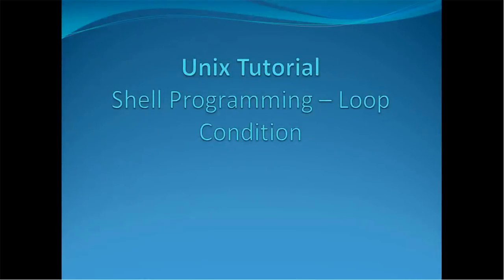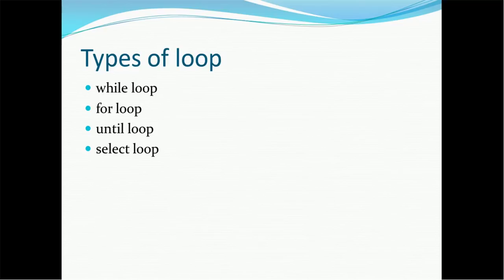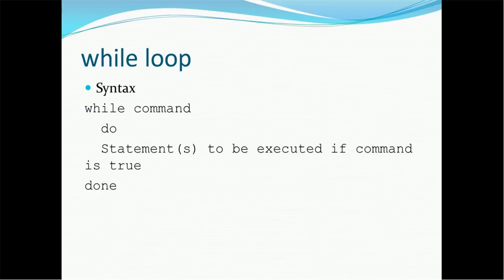Hello everyone, welcome back. In today's tutorial on Unix, we are going to see another concept about shell programming, and that concept is loop conditions. There are several loop conditions available in Unix. The types of loop available are while loop, for loop, until loop, and select loop. Today we are going to see how to use while loop and for loop during programming.